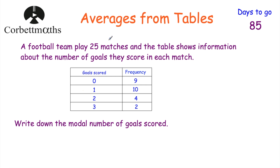Here's a practice question: a football team played 25 matches and the table shows the number of goals scored in each match — 0, 1, 2, or 3 goals with their frequencies. Part a: work out the modal number of goals scored. The highest frequency is 10, which corresponds to 1 goal, so the modal number of goals scored is 1.